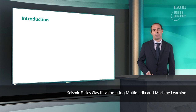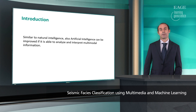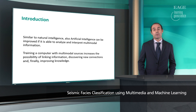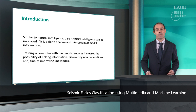This slide includes the key message of this lecture. Similar to natural intelligence, artificial intelligence can also be improved if it is able to analyze and interpret multimodal information. For that reason, if we train a computer using multimodal sources of information, this can increase the possibility of linking different types of information, discovering new links, and finally improving our knowledge.